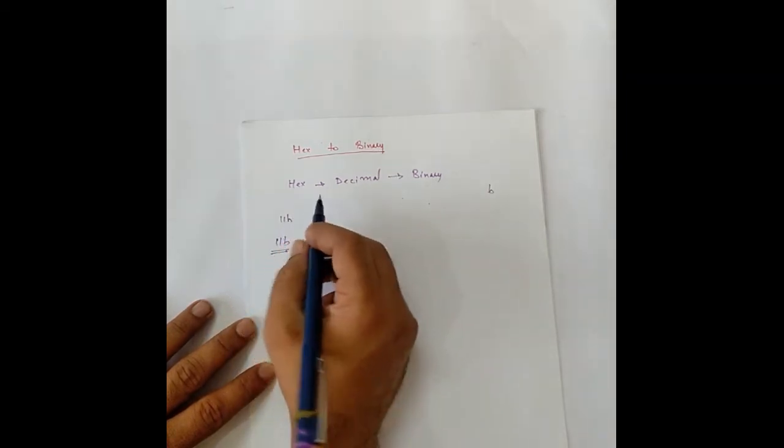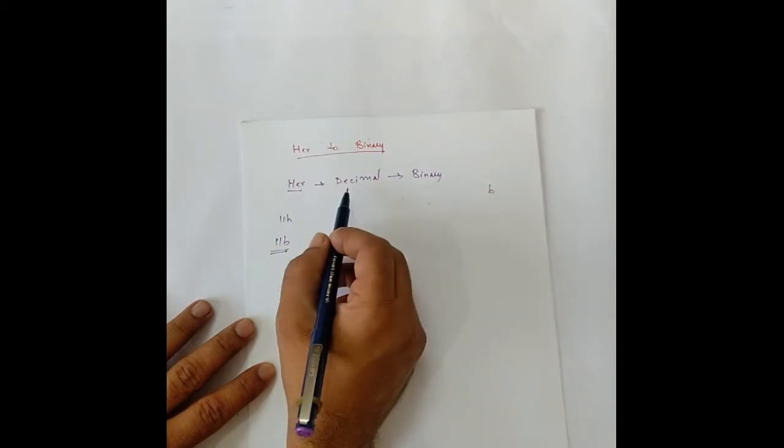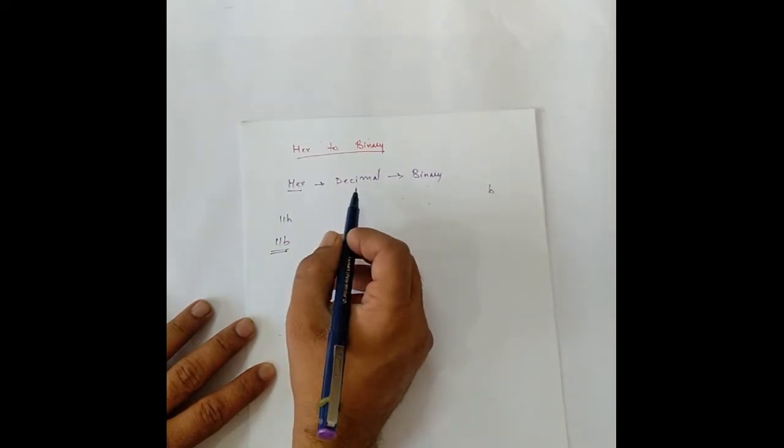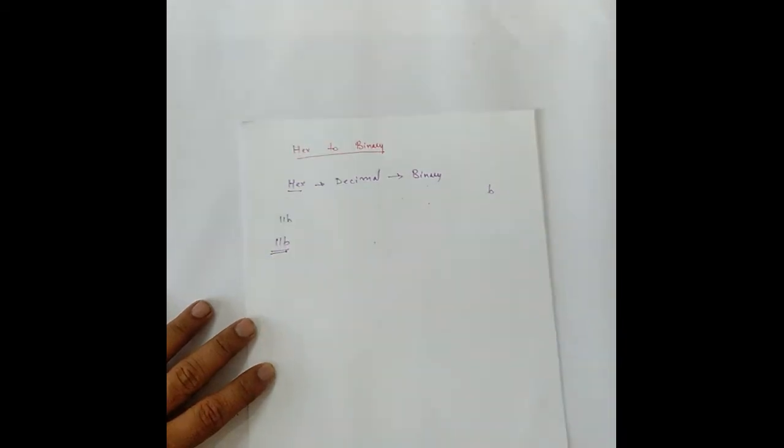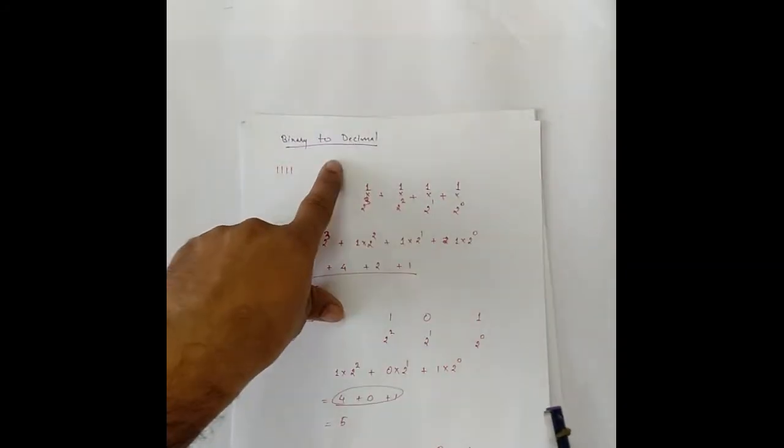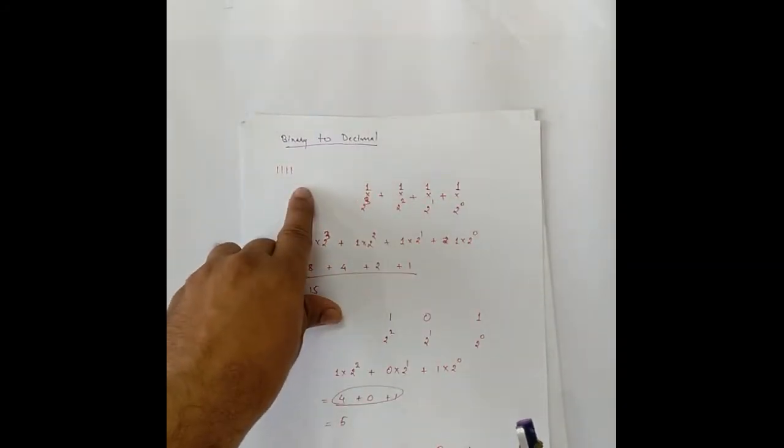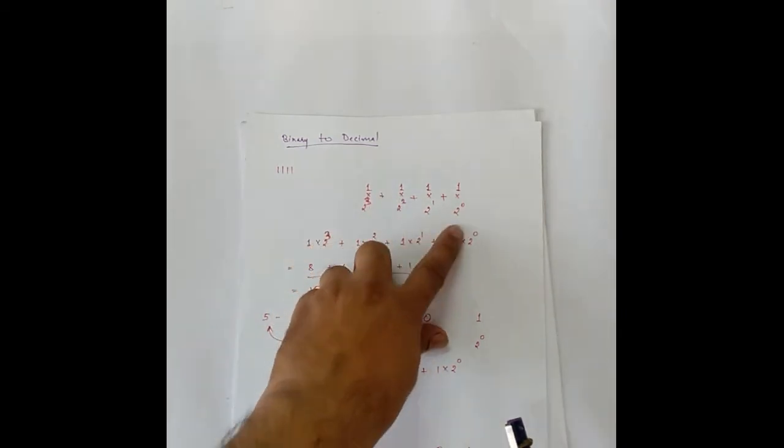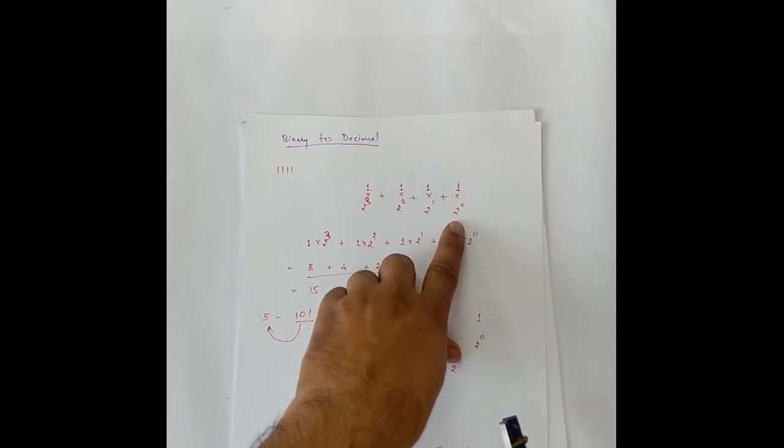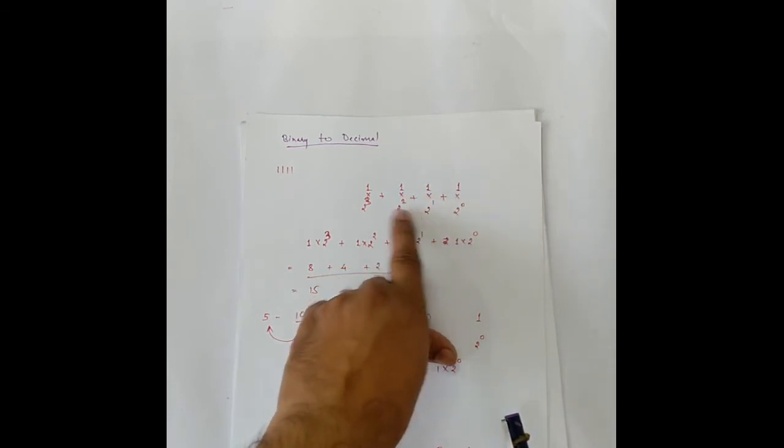Now, to convert from any of these systems to decimal, what we have to do? We have to multiply with the power of that base. Like we had seen in this example for binary to decimal. We had multiplied the binary number with the powers of the base. Each digit with the power of the base. The base of binary is 2 and we were taking the powers of it. 0, 1, 2, 3. And we were multiplying each of these digits with that power.